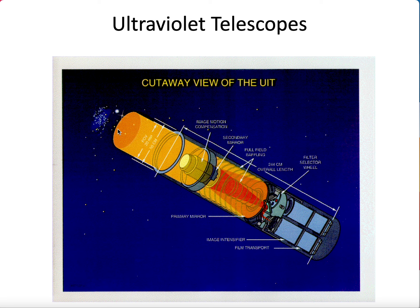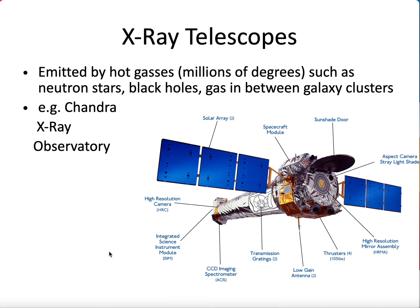Here's a cutaway of an ultraviolet telescope — you can see there's a primary mirror that refocuses light down onto a detector. Moving to even higher frequency, we go to X-ray telescopes. At this point wavelengths become so short that — as you know from experience — X-rays penetrate through a lot of matter. You don't really use dishes to focus them anymore and need a slightly different technology. This is used for really energetic events, like hot gases around neutron stars or accretion disks from black holes.